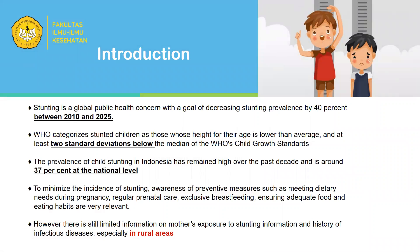We begin with the introduction. Stunting is a global public health concern with a goal of decreasing stunting prevalence by 40% between 2010 and 2025. Based on WHO, stunting children are children whose height for their age is lower than average and at least two standard deviations below the median of WHO child growth standards.